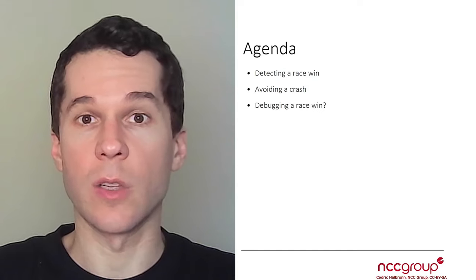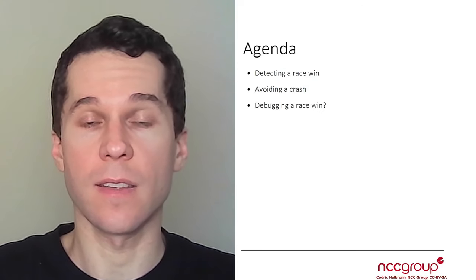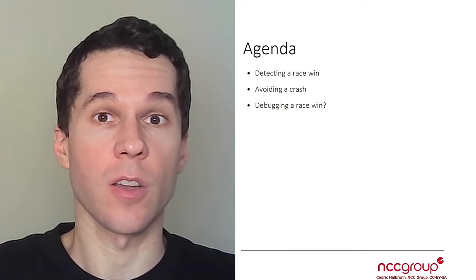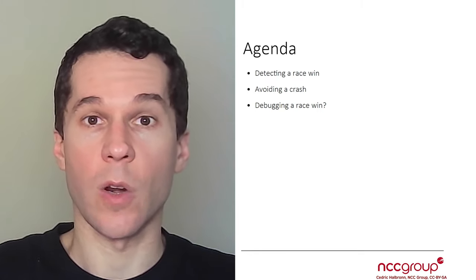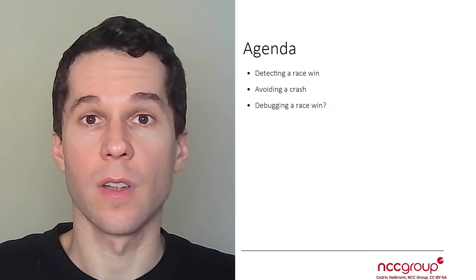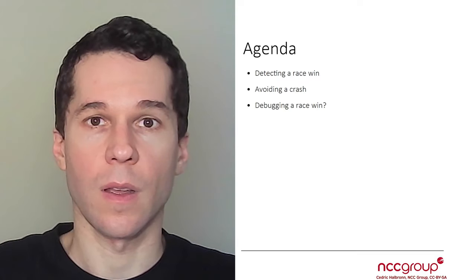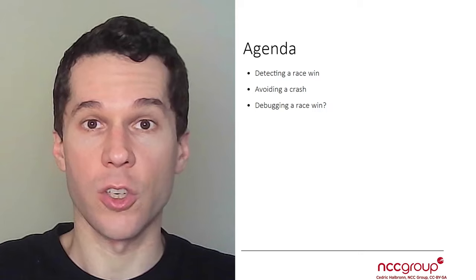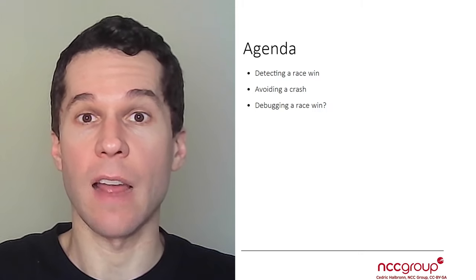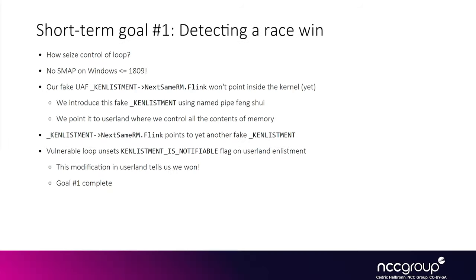In this video we'll see how to detect that we win the race from userland, since the kernel is going to touch our userland enlistments. We'll see what we need to set in our fake enlistments to avoid a crash in the kernel, and how to make the debugger kick in right after we win the race. There is no SMAP on Windows 10 1809, so we can give a userland pointer to the kernel and it will use it without issue.